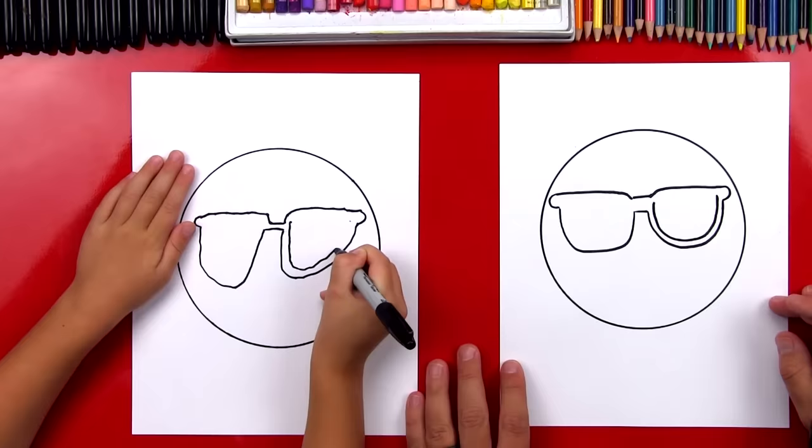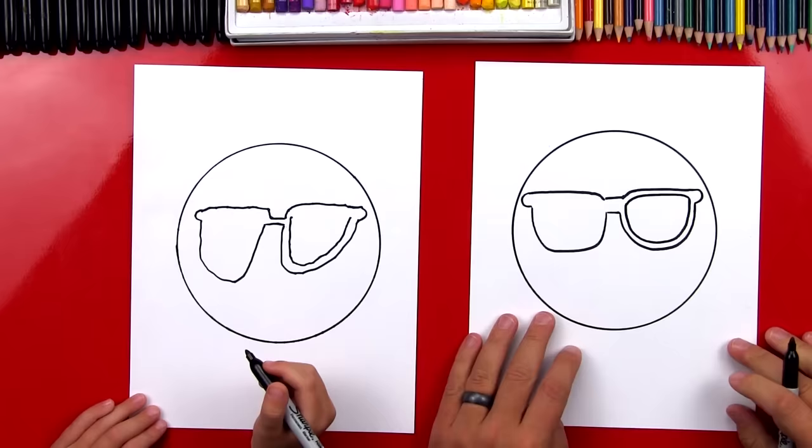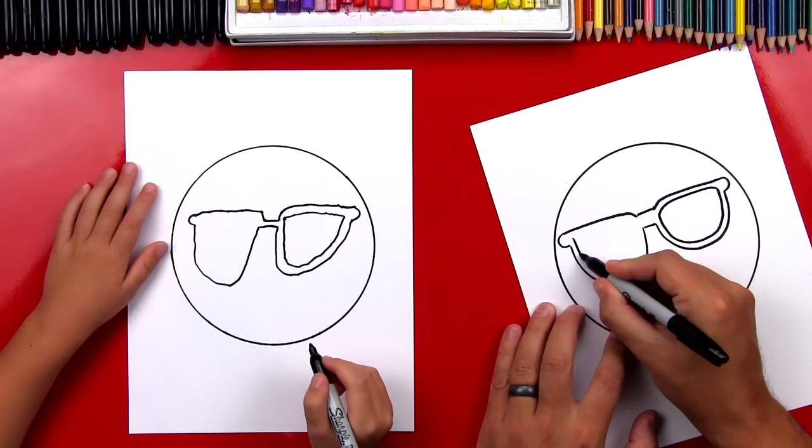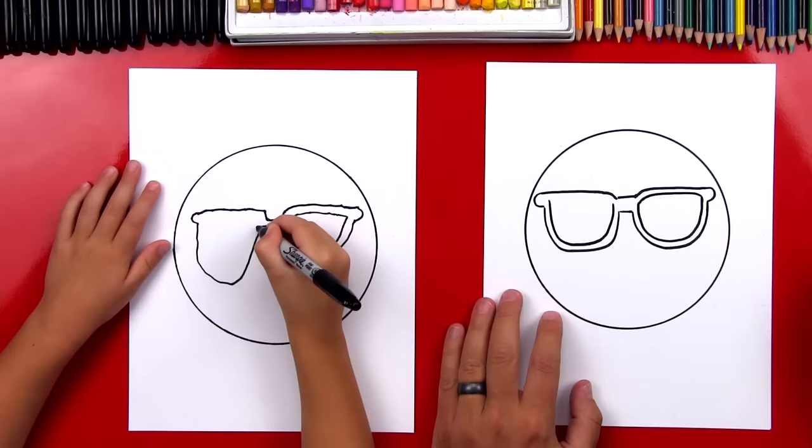And then we can draw the top of our sunglasses that comes around and connects to the middle. So you draw a line that comes over and connects to the middle. And then we're going to repeat that over here on this side. Draw U. It goes all the way around. And then at the top, let's connect them.